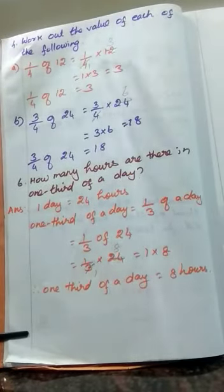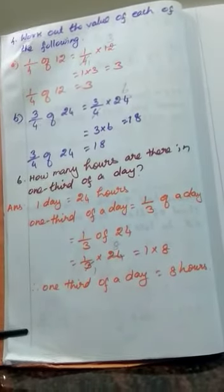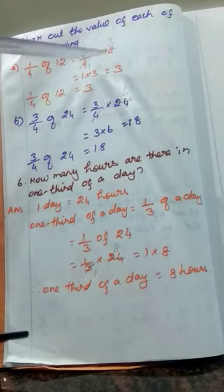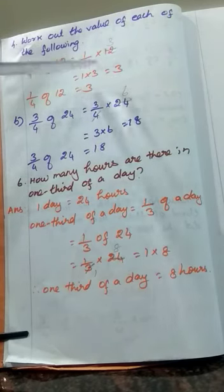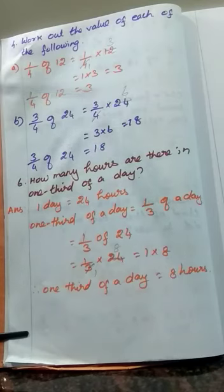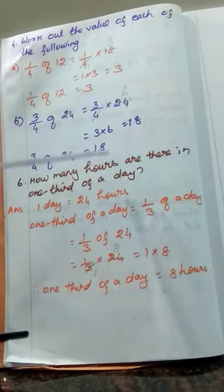Next, work out the value of each of the following. First: 1 by 4 of 12. 'Of' means multiply: 1 by 4 into 12. Strike out denominator and whole number — 1 four is 4, 3 fours are 12 — so multiply: 1 into 3 is 3. Therefore, 1 by 4 of 12 equals 3. Next: 3 by 4 of 24. Write 3 by 4 into 24. Strike out: 1 four is 4, 6 fours are 24. In the numerator, the numbers are 3 and 6: 3 into 6 are 18. So 3 by 4 of 24 equals 18.